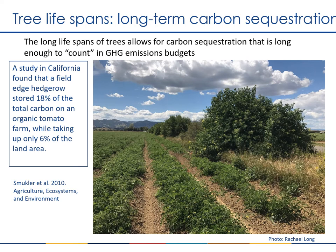The long lifespan of woody trees and shrubs also means they can provide the important ecosystem service of carbon sequestration. One study of a tomato field in California found that field edge hedgerows stored 18 percent of the total carbon on the farm while occupying only six percent of the land area. However, the trees need to stay in the ground long enough so that they really keep the carbon in place and it doesn't get sent back to the atmosphere as carbon dioxide. Conventionally, 100 years is considered a typical time frame to be counted as long-term sequestration, but shorter time frames can still help to a more limited extent.